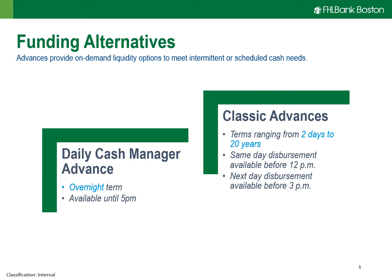The second product is on the right-hand side: our Classic Advances. As the name implies, it is the very popular, straightforward advance — fixed rate, fixed term — and the terms range from anywhere from two days all the way out to 20 years. There is also a fair amount of flexibility on timing: for same-day disbursement or settlement, funds can be available typically before 12 o'clock; for next-day disbursement, Classic Advances are available anytime before 3 p.m.